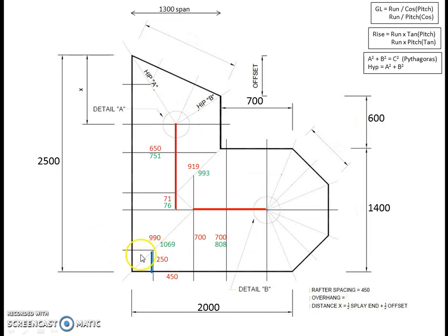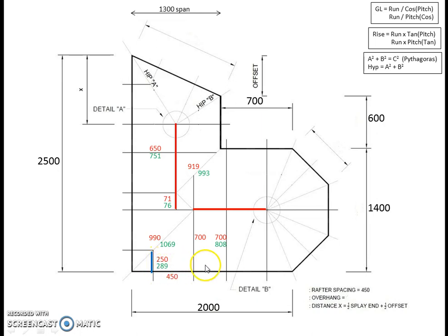Using the GL formula at the top, 250 divided by the cosine of 30 degrees gives us a geometric length of 289.